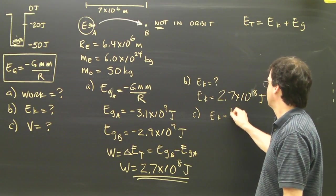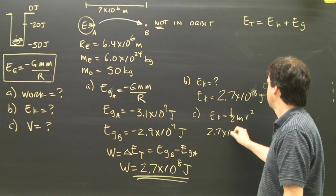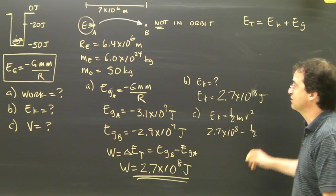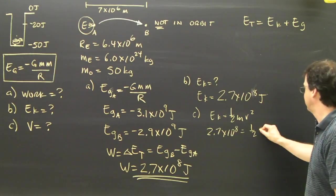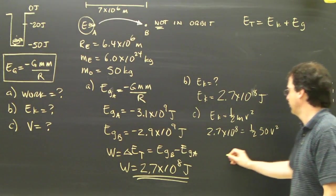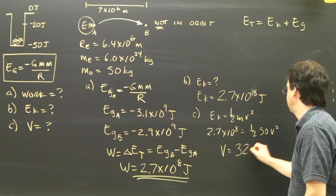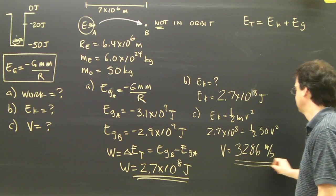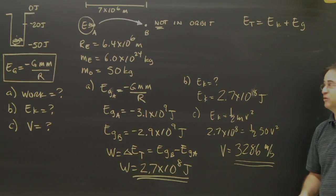Kinetic energy is 1 half MV squared. So 2.7 times 10 to the 8 equals 1 half, and my mass, well this is the mass I'm throwing up into the air, so 50 V squared. V ends up being 3,286 meters per second. And then you might need to round it off depending on how you do it.